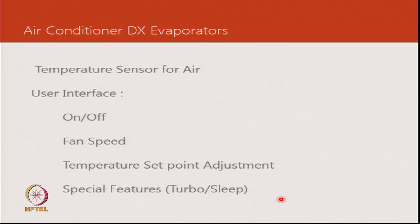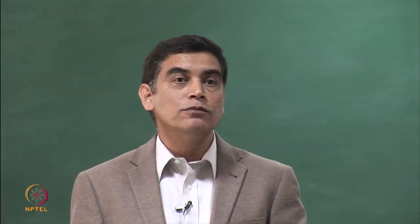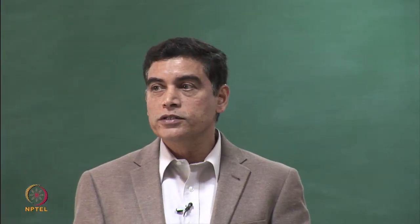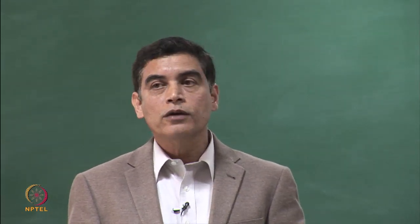The controller includes a user interface that must allow the unit to be switched on and off, means to regulate fan speed, means to adjust temperature, and potentially special features. Some manufacturers include a turbo cooling feature: when you enter a room and want quick cooling, selecting that mode runs the fan and — if it is a variable-speed compressor — the compressor at maximum speed.